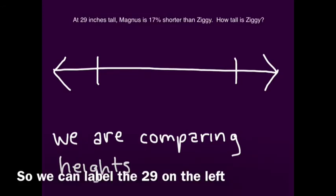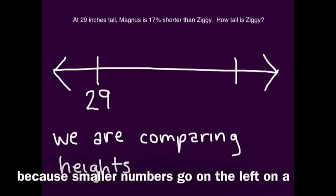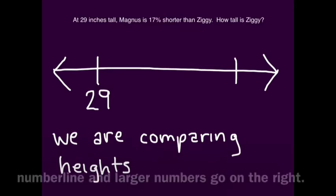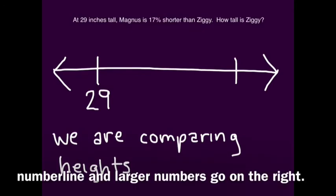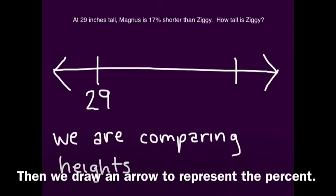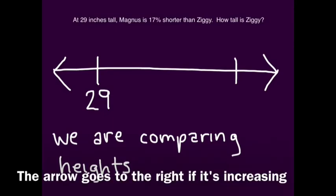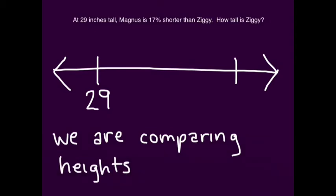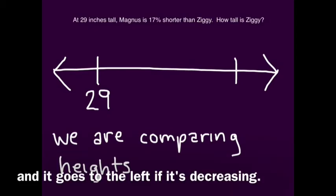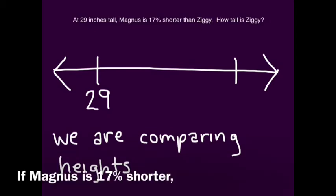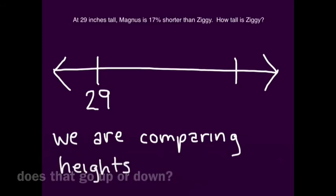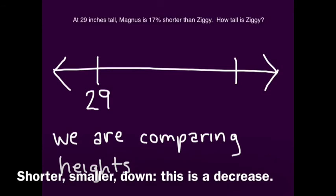So we label 29 on the left, because smaller numbers go on the left on the number line and larger numbers go on the right. Then we draw an arrow to represent the percent. The arrow goes to the right if it's increasing and to the left if it's decreasing. If Magnus is 17% shorter, that goes down — this is a decrease.